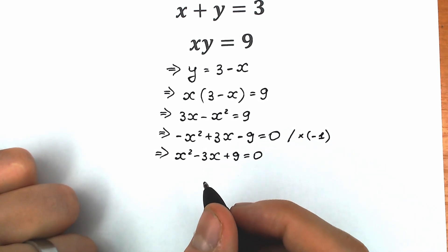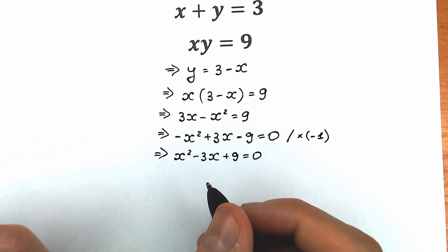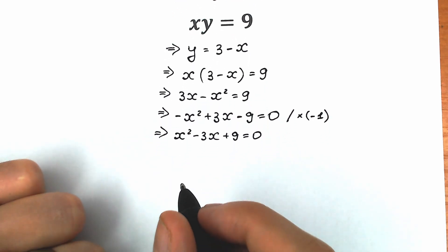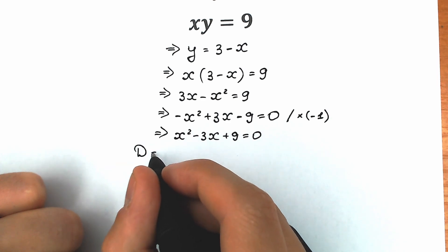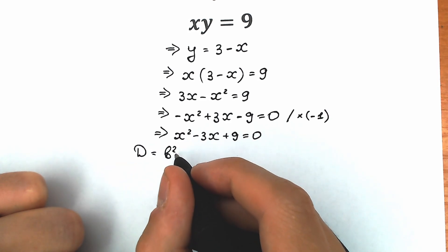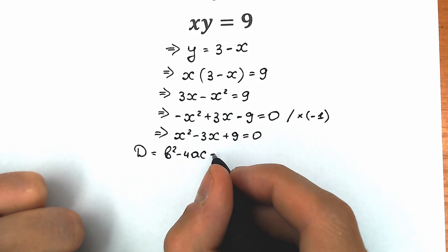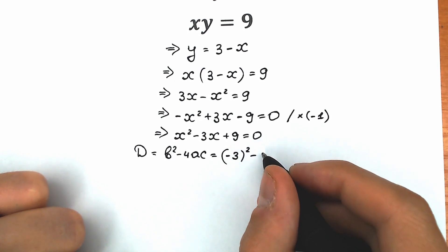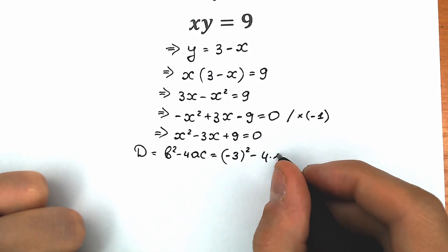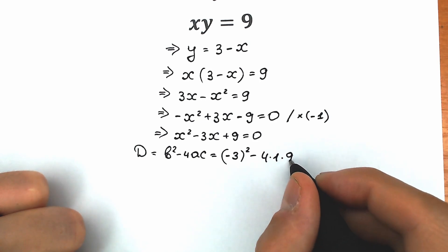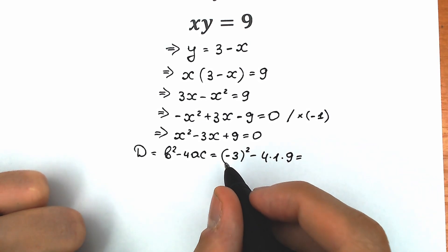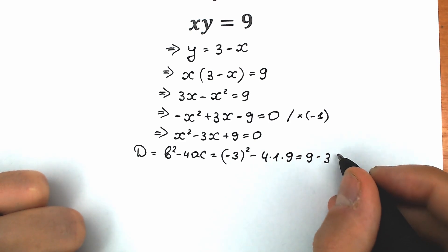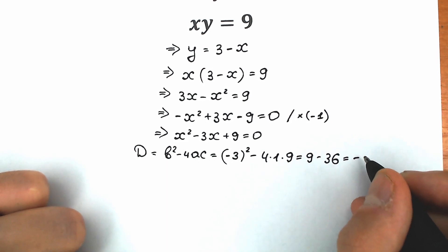This is a basic quadratic equation. Let's solve it. We have a lot of ways to do this, but the main common one is to find our discriminant. Our discriminant equals b squared minus 4ac — the classic school formula. Let's plug in: b squared is minus 3 squared, minus 4 times a (which equals 1) times c (which equals 9). That gives us 9 minus 36, and as a result we have minus 27.